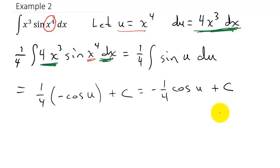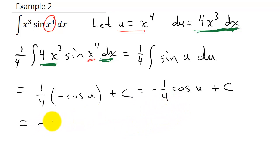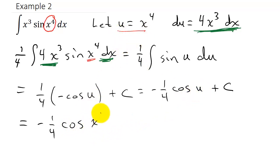My original problem is in terms of x, so I have to get my solution in terms of x. This is going to be negative one-fourth cosine of x to the fourth, plus c.